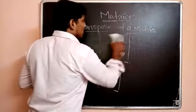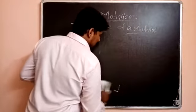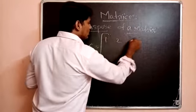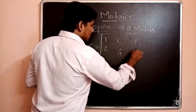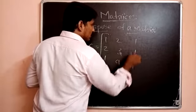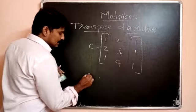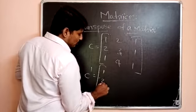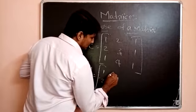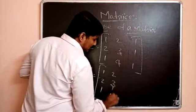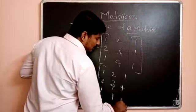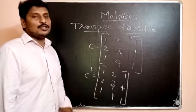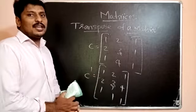Next, another example: C is equal to the matrix 1, 2, 1; 2, 3, 1; 1, 4, 1. You can write C transpose is equal to 1, 2, 1; 2, 3, 4; 1, 1, 1 — obtained by interchanging rows and columns of the matrix.